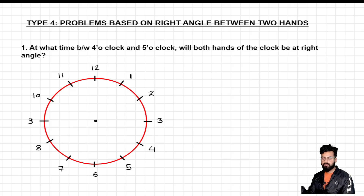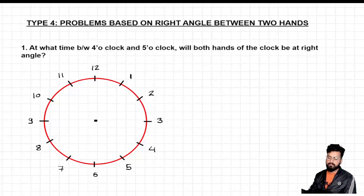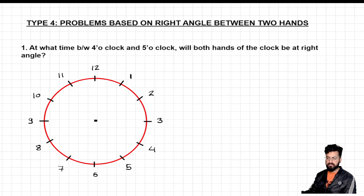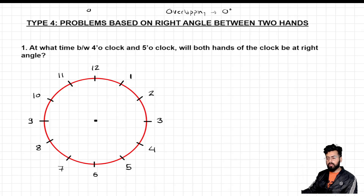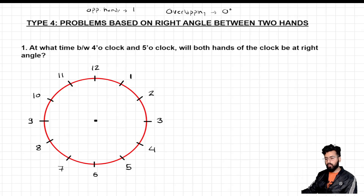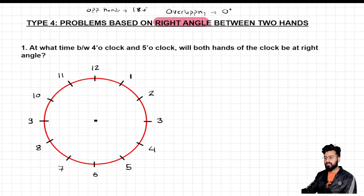Before I start with the next type — Type 4 problem based on right angle between two hands — there is something crucial to understand. When we talk about overlapping conditions, overlapping means the angle is 0 degrees. And when we talk about opposite hands, the angle is 180 degrees. Now for Type 4, the condition I want to satisfy is a right angle between the two hands, meaning the angle I'm looking at is 90 degrees.